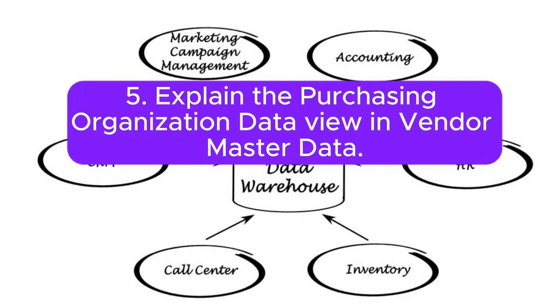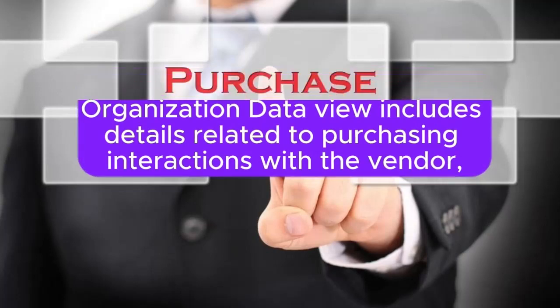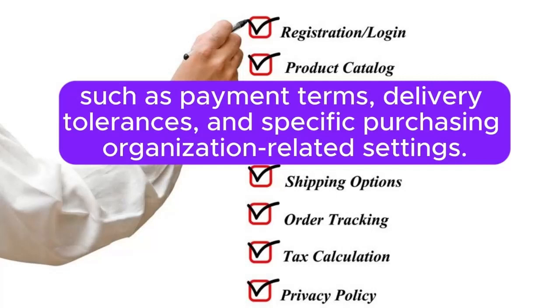5. Explain the purchasing organization data view in Vendor Master Data. Answer: The purchasing organization data view includes details related to purchasing interactions with the vendor, such as payment terms, delivery tolerances, and specific purchasing organization-related settings.